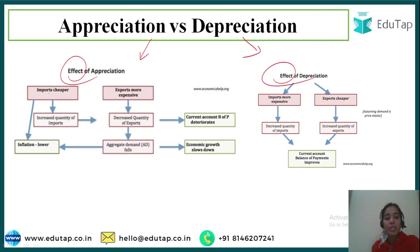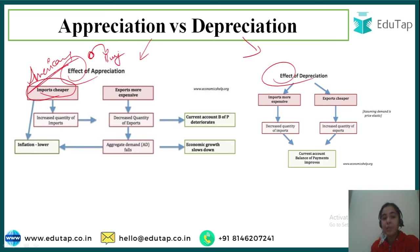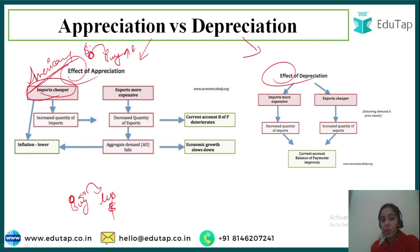Effect of appreciation: imports become cheaper. Since the dollar has appreciated, Americans can buy more goods in India with the same amount. With 1 dollar they can buy more, or they can buy the same amount with fewer dollars — say 0.9 dollars. So imports have become cheaper for Americans.